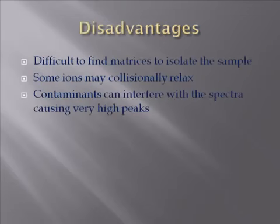The disadvantages: it's difficult to find which matrix you need to isolate the polymer that you have. Since you have to have a UV absorbing matrix, that's what causes your main problems. Also, some ions may be collisionally relaxed, which is due to soft ionization. Because the majority of the energy is used to volatilizing the matrix rather than exciting the ions, it's possible for the ions to relax from the excited state after some collisions.